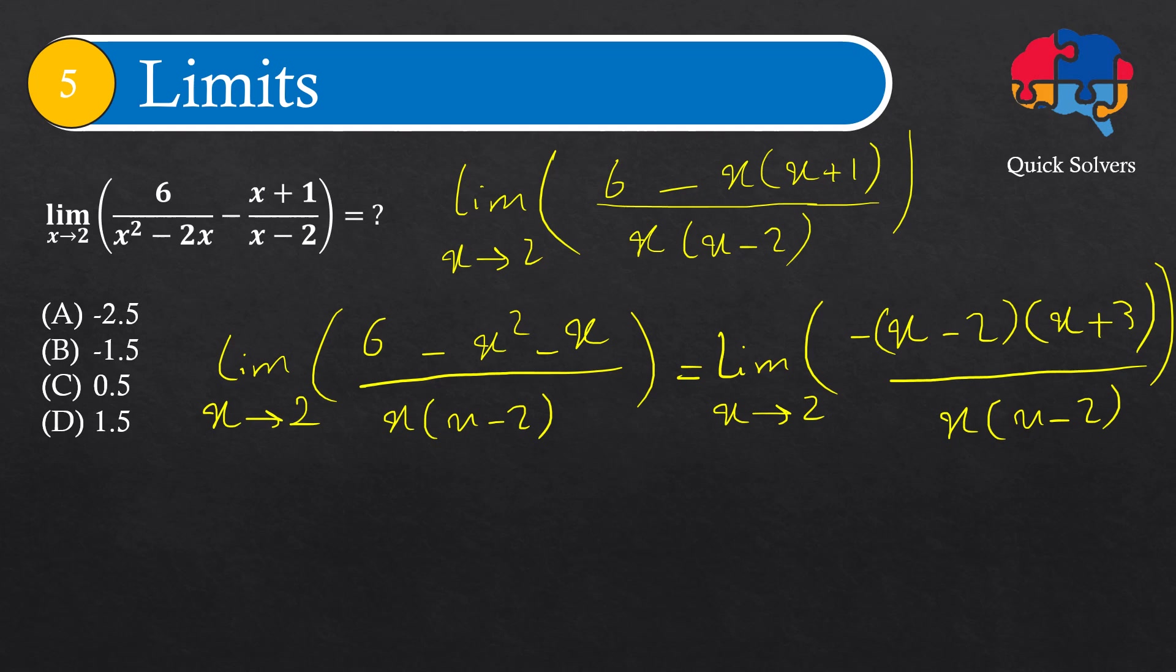Now you see that this x minus 2 and this x minus 2 cancel out each other. And that's actually the factor that led to having an indeterminate form here. So if I remove those, then what I'll get is this all equals to the limit of minus x plus 3 over x, where x approaches to 2.